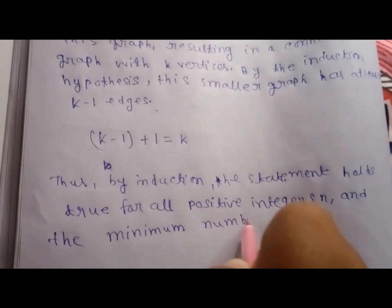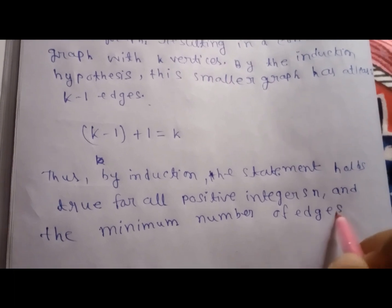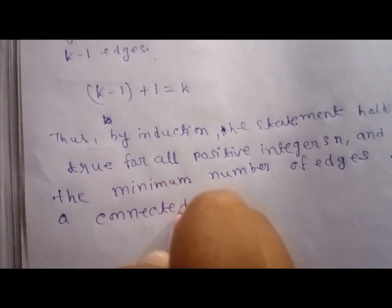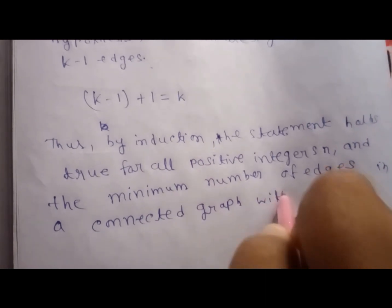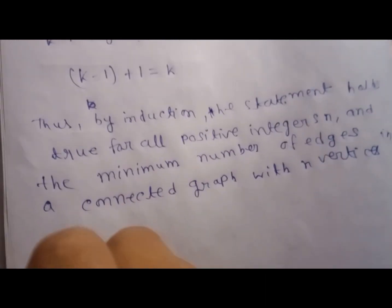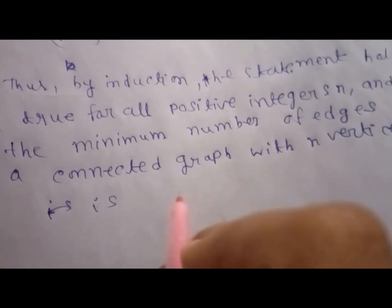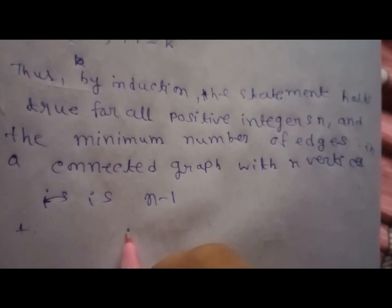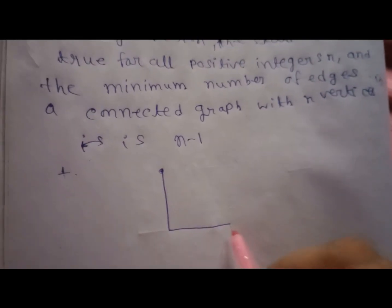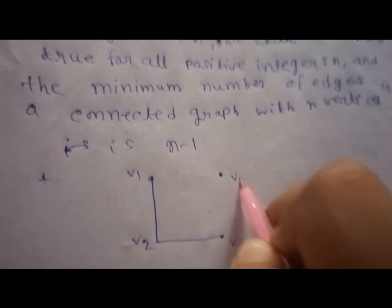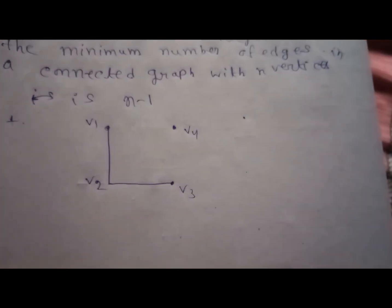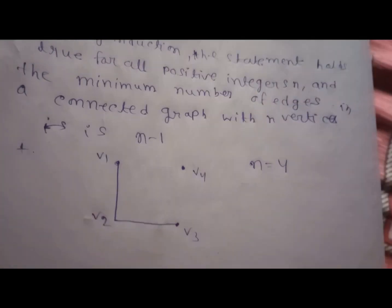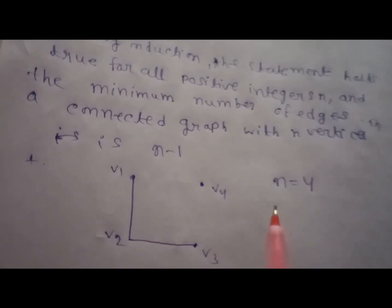The minimum number of edges in a connected graph with n vertices is n minus 1. Now take an example: suppose there are four vertices — v1, v2, v3, and v4. The number of vertices is equal to 4.